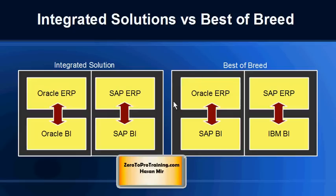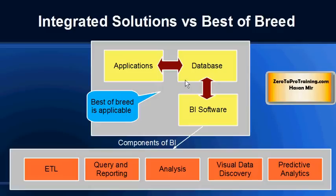Here is an example of what we have discussed. In an integrated solution, you will see the same vendor's applications connected with the same vendor's business intelligence tools. In best-of-breed, there will be a mix and match. That mix and match could take place at a higher level where you are using one business intelligence software with a mismatched database in terms of vendors.